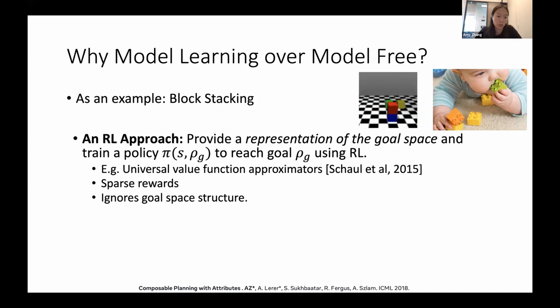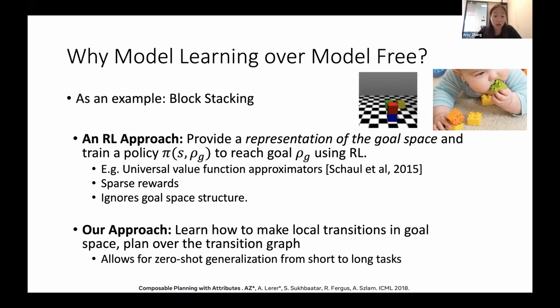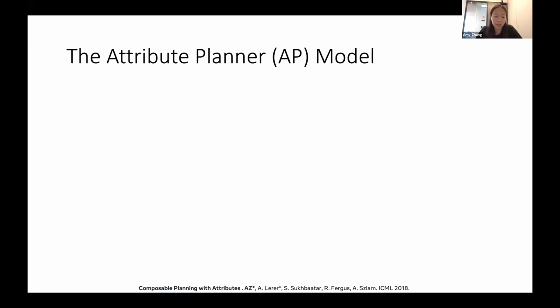That structure usually looks a lot like the state space, which you're discovering as you get transitions from your environment. In this paper from ICML 2018, our approach instead was to learn how to make local transitions in a goal space and plan over a transition graph. We can show that this allows for zero-shot generalization to new goals. I'm going to give a brief overview of how this works. It's very high level. We do assume we have access to this nice attribute space. So we're doing this from pixel observations, but we are given these relational attributes that we think are more useful for reasoning over.